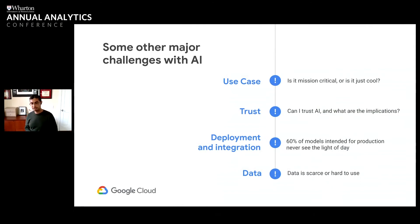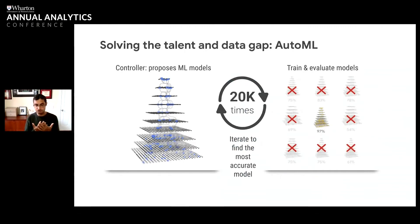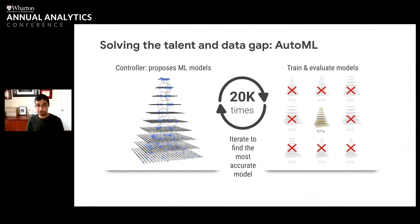A few of the things we've been experimenting with here at Google: one is solving that talent and data gap by using machine learning to actually create machine learning. We have a product called AutoML, where a controller takes in a number of machine learning models, tries them against data sets, checks the outcome, then feeds that outcome back into the system — sometimes 20,000 times — to iterate and find the exact right model. This helps newer developers start to utilize machine learning without having to understand massive models, and helps experienced data scientists access the latest and greatest techniques. By doing this, we can start to solve that talent gap.